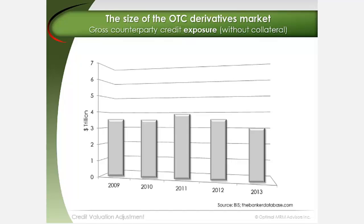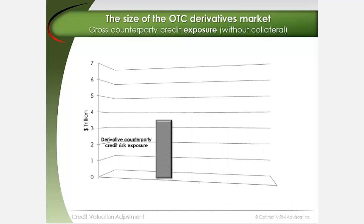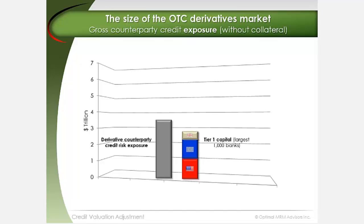To put into perspective the potential risk associated with this credit exposure, excluding collateral, it is equal to the amount of Tier 1 capital — broadly defined as common equity and retained earnings minus goodwill — held by all large banks in the US, the Eurozone, the UK, Japan, and more than 50% of Tier 1 capital held by the largest 1,000 banks worldwide.